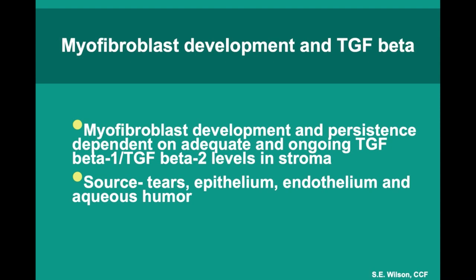Myofibroblasts are absolutely dependent on an adequate and ongoing supply of TGF-beta-1 and/or TGF-beta-2, or they undergo apoptosis — with some evidence they may revert back to corneal fibroblasts, though only shown in vitro. The source of TGF-beta for the most part is the tears, the epithelium, the endothelium, and aqueous humor. For endothelial injury, it's the aqueous humor and peripheral endothelial cells that make TGF-beta-1 and TGF-beta-2.